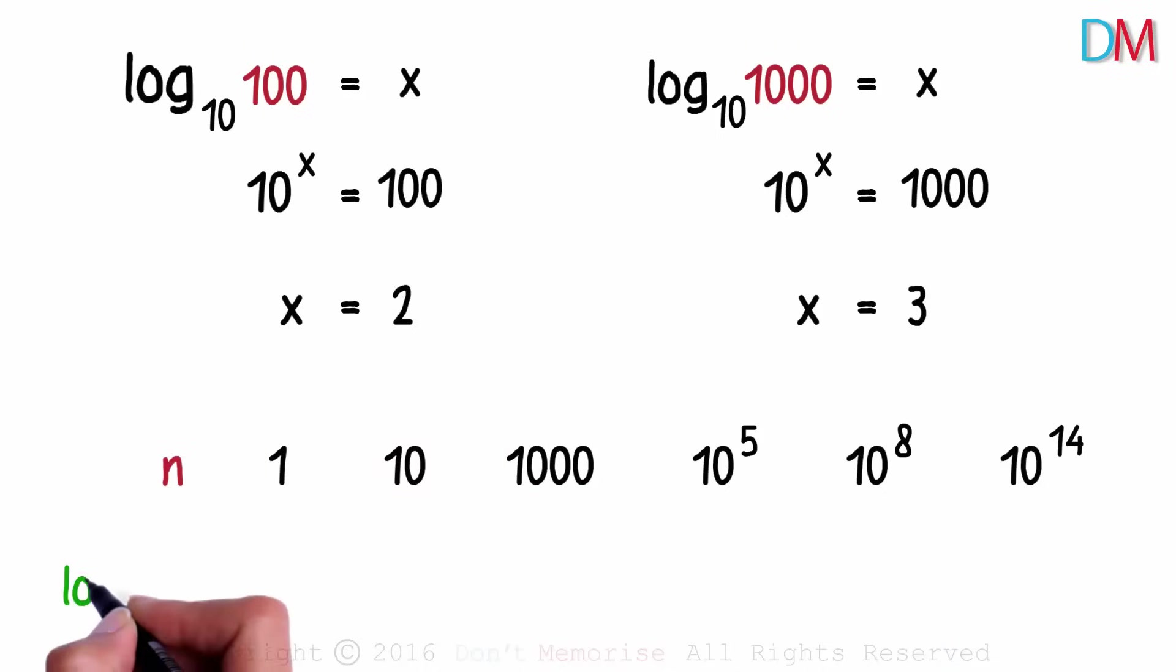How about we take the logarithm of the numbers to the base 10? What will be the log of 1 to the base 10? 10 raised to 0 is equal to 1. Hence we have a 0 here. Log 10 to the base 10 will equal 1, as 10 to the power 1 will give us 10. Log of 1000 to the base 10 will equal 3, as 10 cubed is 1000.